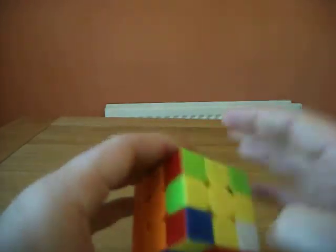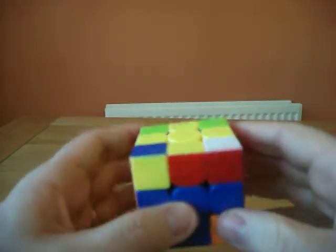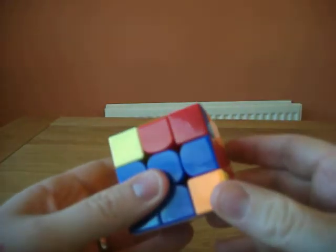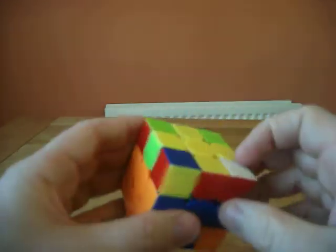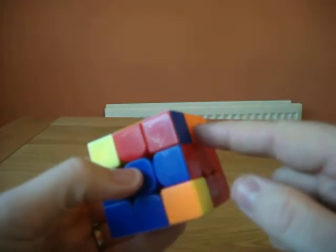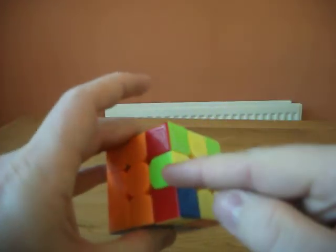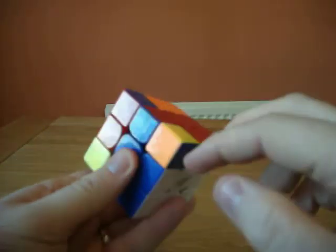Now what we need to do is we need to position these above their corresponding centres. So here we have the red followed by orange, blue and green. And that's wrong because these two are opposite colours. Green is opposite blue and these two are opposite colours. Red is opposite orange.